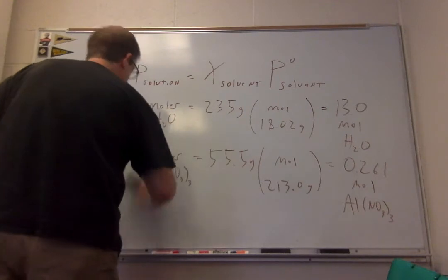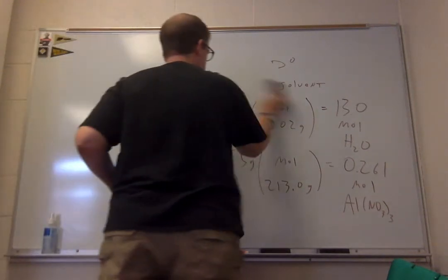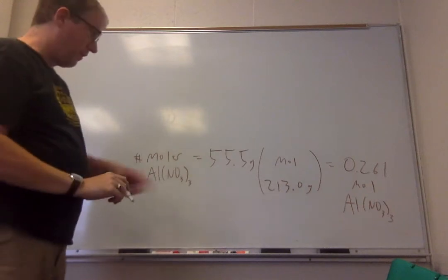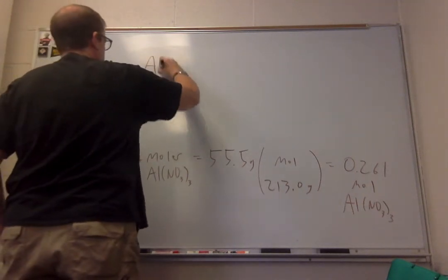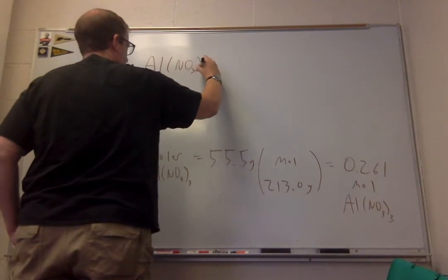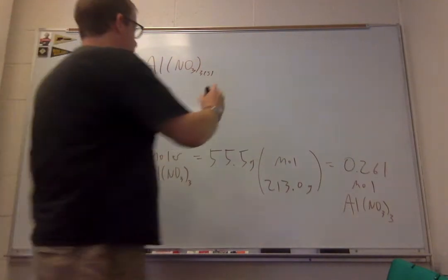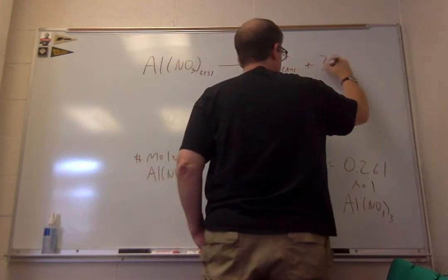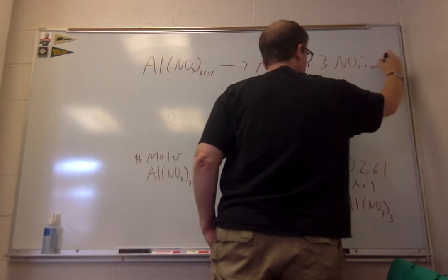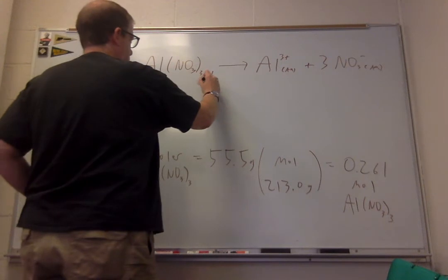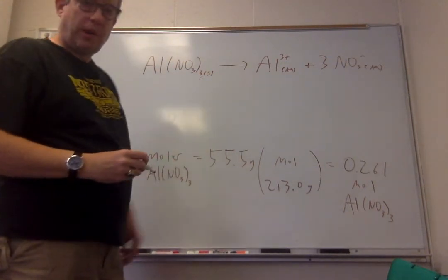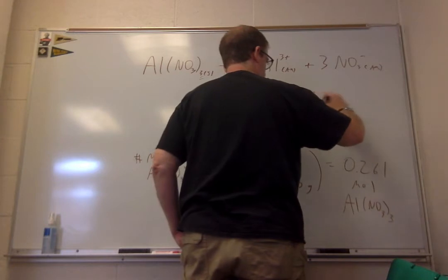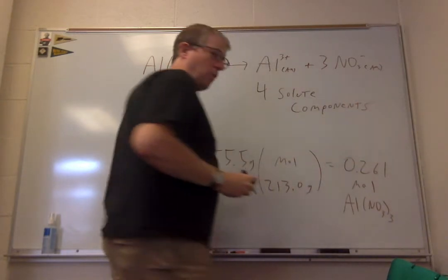So what do we do now? We convert this to the number of moles of solute. So what happens with this stuff when we dissolve it in water is it breaks apart into its constituent ions. And so we have three nitrates in there, and so we're going to get four solute components.